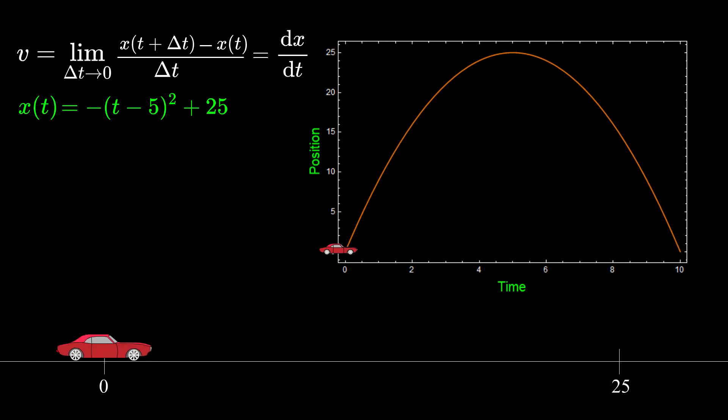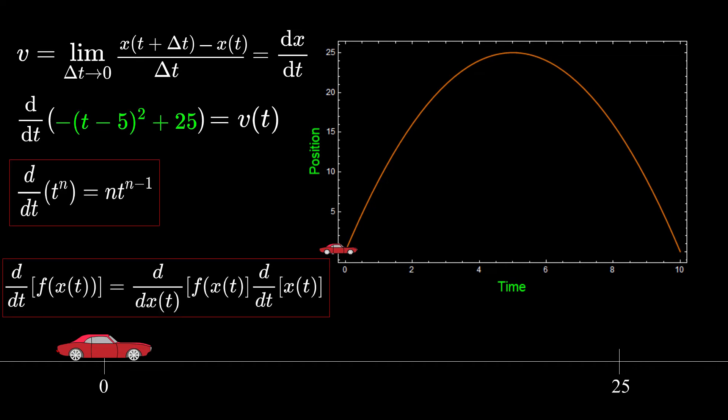If we calculate the derivative of this function with respect of time, we would get the velocity function as a function of time. We could just use the basic rules for derivatives, but we are going to calculate this using the definition we derived.